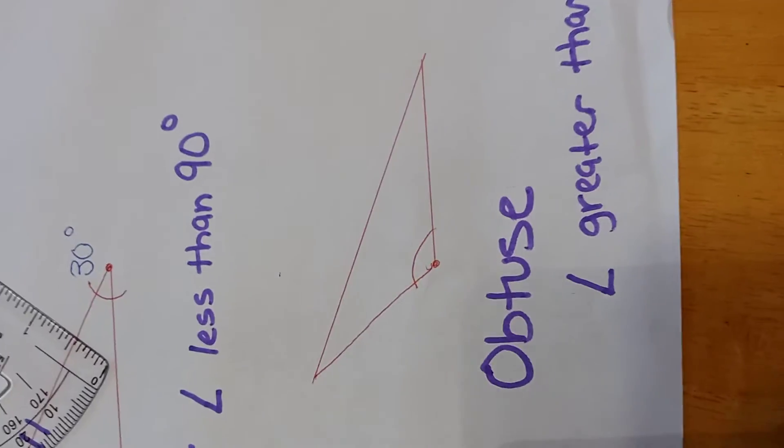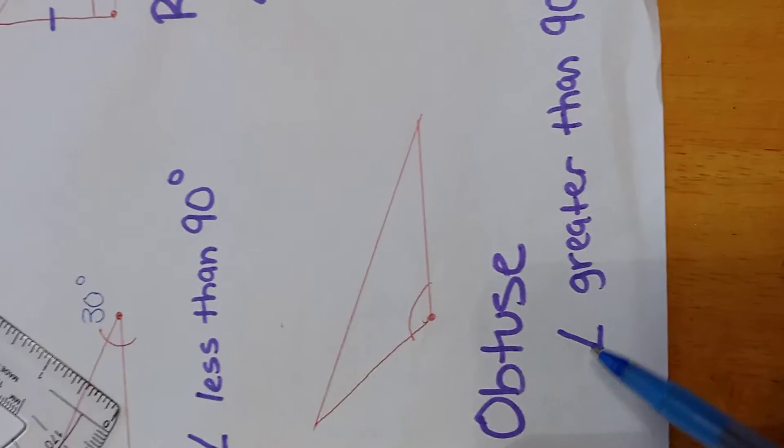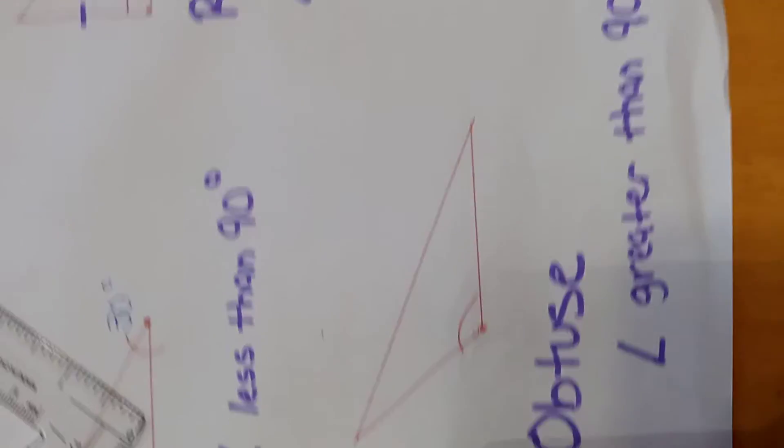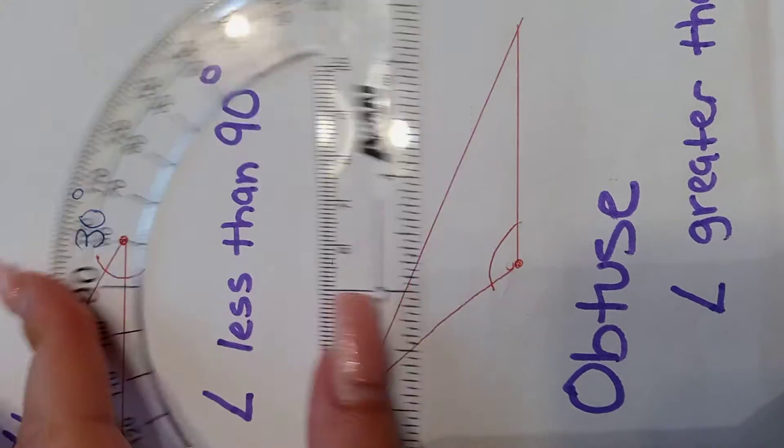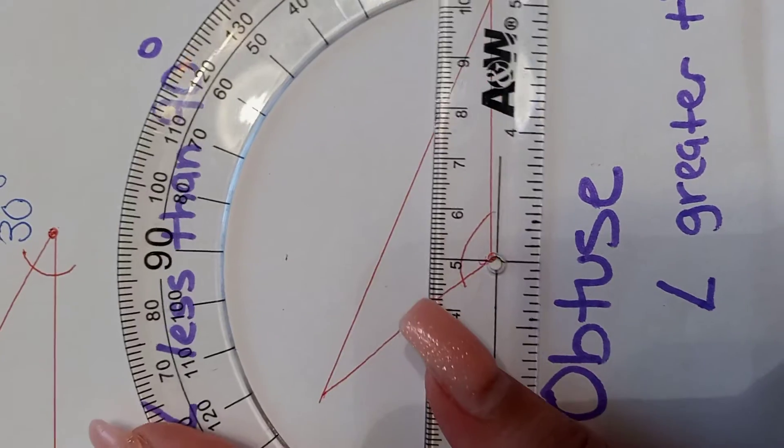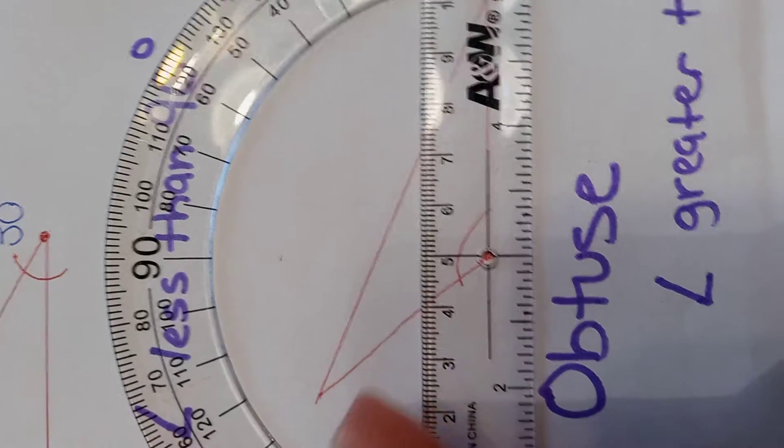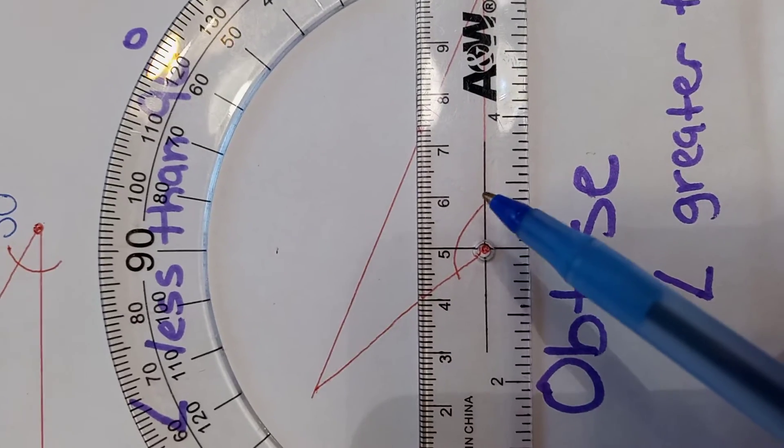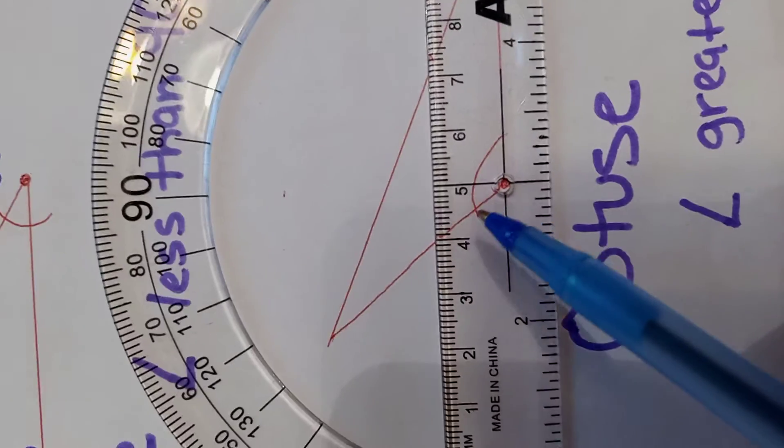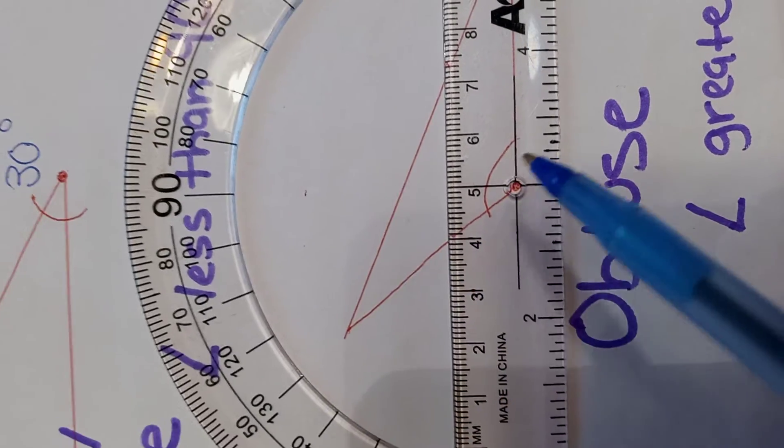Now, the third triangle is an obtuse triangle, which means the angle is greater than 90 degrees. Let's solve for this angle. Again, we're going to align the protractor right here, and the other line is over here.